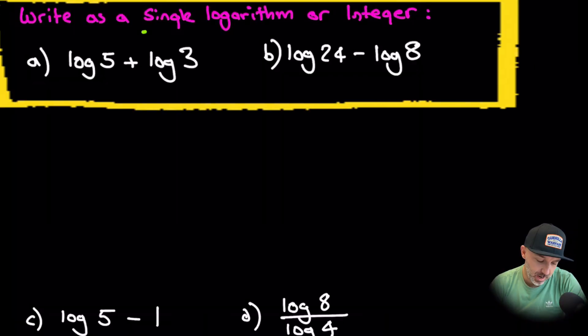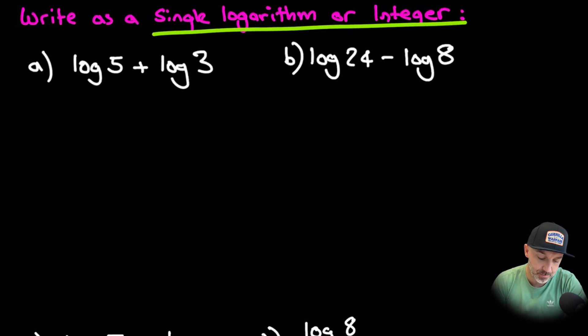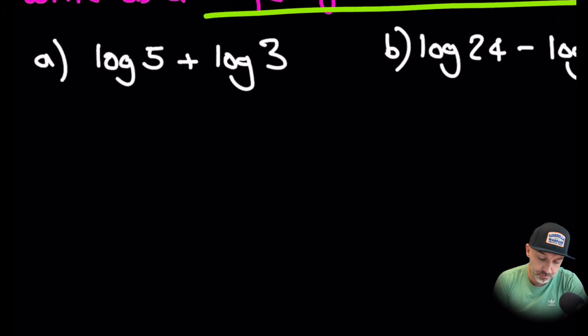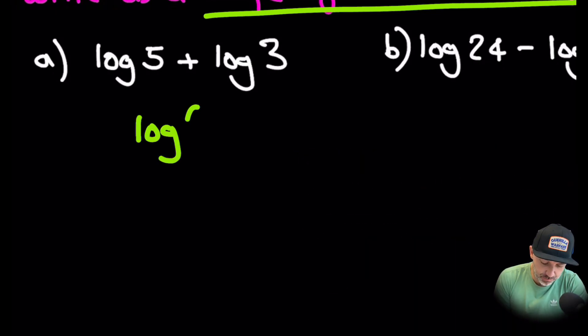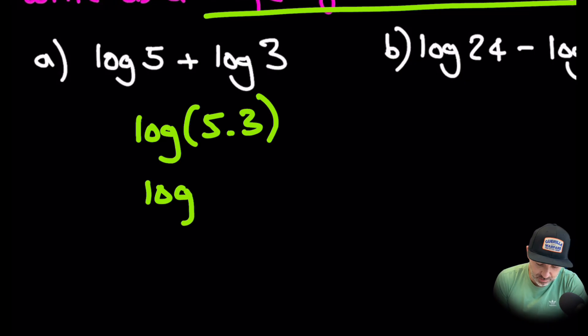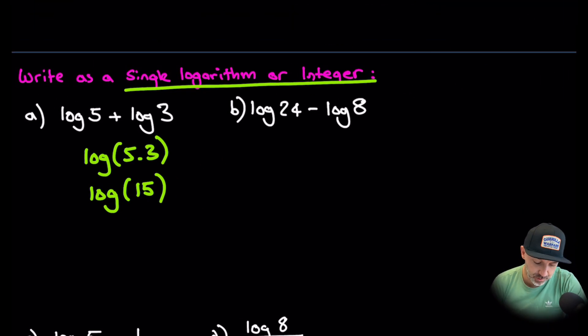Write as a single logarithm or an integer. Integer means a whole number. So log 5 plus log 3, that's log A plus log B. We can multiply those two together, so it's five times three. As a single logarithm it will be log 15 and we will do nothing else with that.